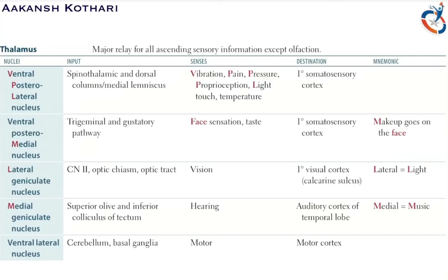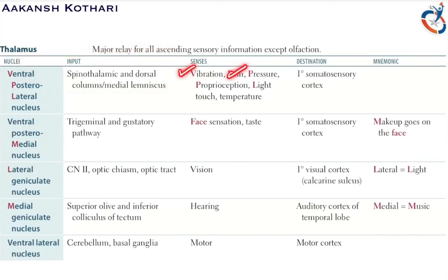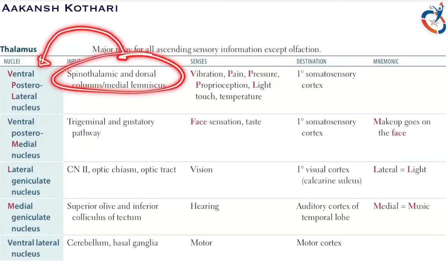The ventral posterior lateral nucleus (VPL) receives inputs from the spinothalamic and dorsal column medial lemniscus pathways — all ascending tracts. It senses vibration, pain, pressure, proprioception, light touch, and temperature. From the VPL, fibers are relayed to the primary somatosensory cortex.